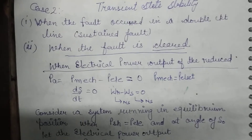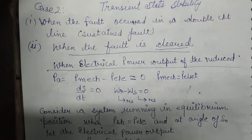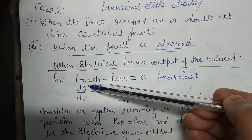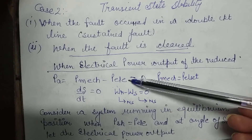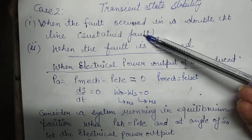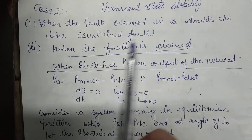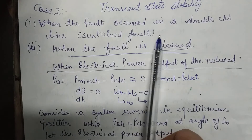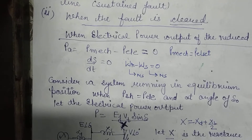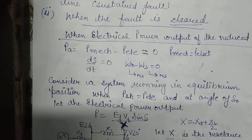Let's start with another topic of power system stability — when your electrical power output has been reduced. In the previous lecture, we considered when mechanical power input was increased, and also the case where a fault occurred in a double circuit line that was not yet cleared. Today, we study when a fault occurs in a double circuit line but the fault has been cleared after some time. Our focus today is on the critical clearing angle — both numerical and theoretical parts are extremely important.